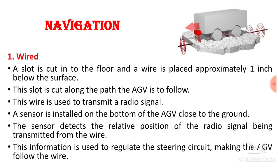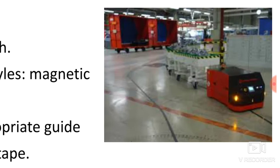This information is used to regulate the steering circuit, making the AGV follow the wire. So in wired navigation, a slot is cut inside the surface of the floor, the wire is placed, radio signals are transmitted through the wire, and the sensor at the bottom of the AGV detects those signals to determine relative position and regulate steering accordingly.